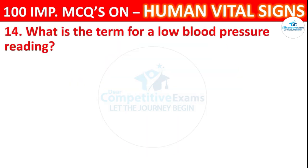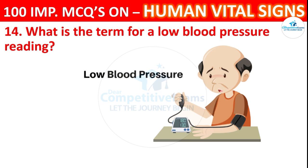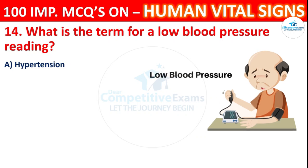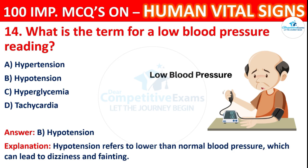Question 14: What is the term for a low blood pressure reading? Options: hypertension, hypotension, hyperglycemia, or tachycardia. The correct answer is hypotension. Hypotension refers to a lower than normal blood pressure, which can lead to dizziness and fainting.